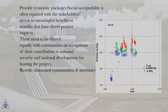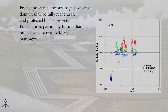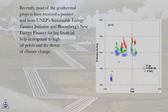Provide economic packages. Social acceptability is often equated with the stakeholders' access to meaningful benefits or benefits that have direct positive impacts. These need to be shared equally with communities in recognition of their contribution to national security and national development for hosting the project. Resettle dislocated communities if necessary. Protect prior and ancestral rights — ancestral domain shall be fully recognized and protected by the project. Ensure that the project will not disrupt forest patrimony. Recently, most geothermal projects have received a positive nod from UNEP's Sustainable Energy Finance Initiative and Bloomberg's New Energy Finance for big financial help in response to high oil prices and the threat of climate change.